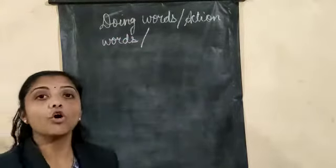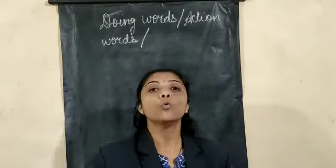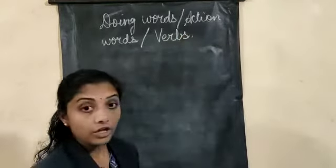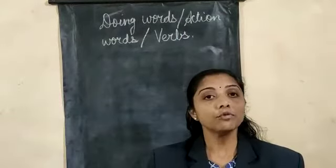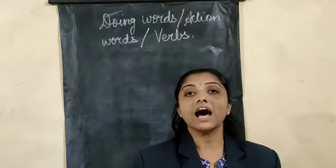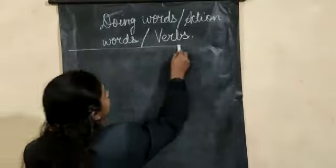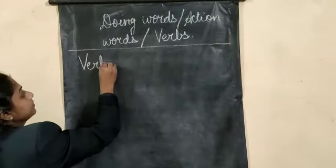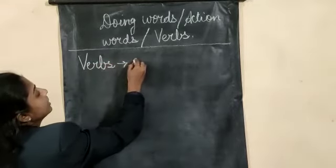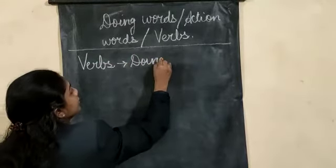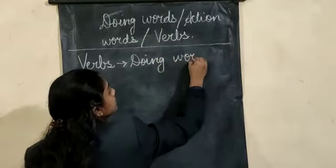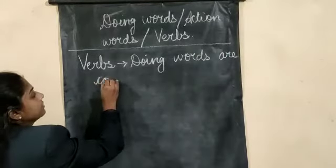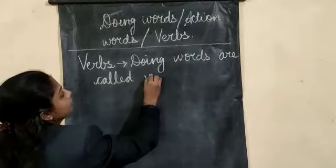These doing words are also called as action words. They are also called as verbs — V, E, R, B, S. So we come to a conclusion that verbs are action words. The definition of verbs is: doing words are called verbs.